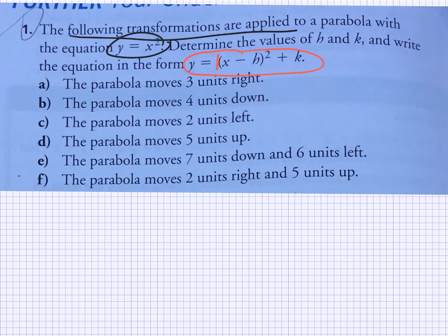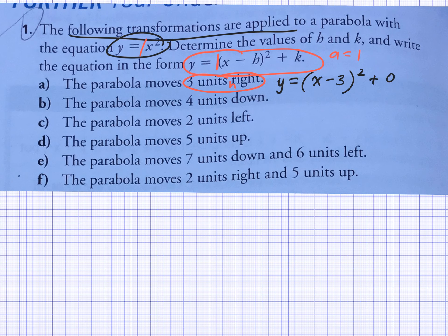In this example, A is 1, so we're not going to do any stretches or compressions. How would you do part A? The parabola moves three units to the right — what would your equation be in vertex form? Y equals — if it's moving three units to the right, does that affect H or K? H. So this would affect H. Y equals bracket X minus 3 squared — and since there's no vertical translation, K is zero.